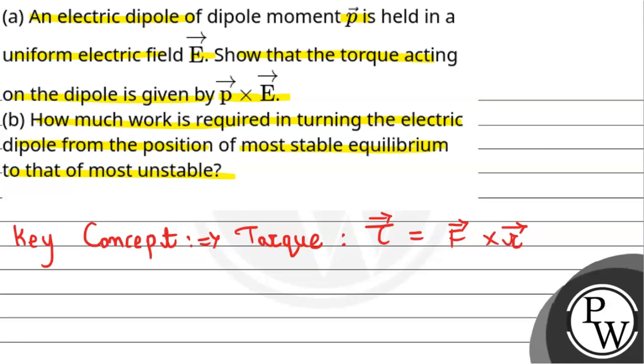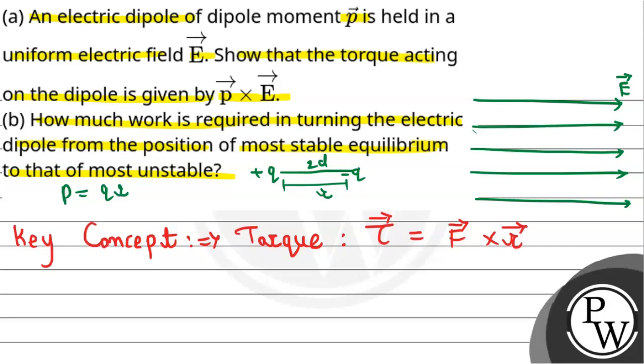First of all, what do we mean? The uniform electric field is in this direction. When two opposite charges are separated by a distance, we call it a dipole. The dipole formula is p equals q times r. We are placing this dipole into this uniform electric field with some angle made with respect to the electric field.